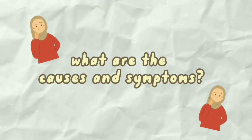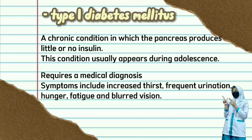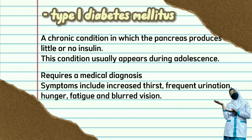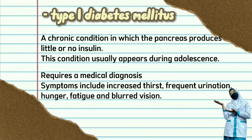What are the cases and symptoms? Type 1 Diabetes Mellitus: a chronic condition in which the pancreas produces little or no insulin. This condition usually appears during adolescence. Requires a medical diagnosis. Symptoms include increased thirst, frequent urination, hunger, fatigue, and blurred vision.